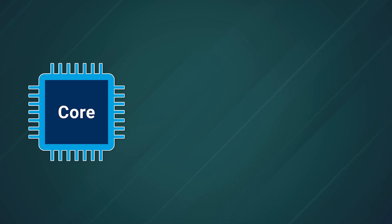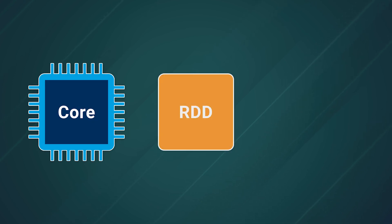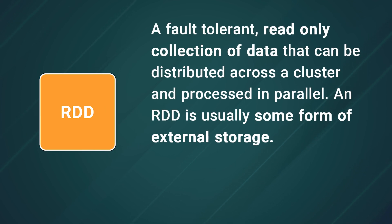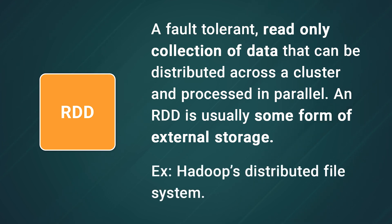Spark utilizes the concept of the resilient distributed dataset, or RDD. An RDD is a fault-tolerant, read-only collection of data that can be distributed across a cluster and processed in parallel. An RDD is usually some form of external storage — for example, Hadoop's distributed file system. Derivative RDDs can be created through the process of data transformation, and all analytical operations are executed upon an RDD rather than the original data.